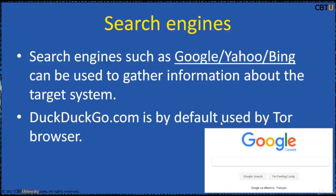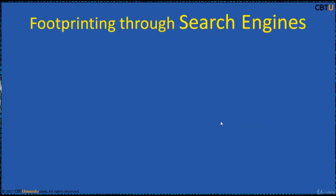A lot and almost everything can be found here with the right querying. Search engines such as Google, Yahoo, and Bing are used to gather information about the target system or enterprise. It depends on how well one knows how to use the search engines to collect information. If used properly, an attacker can gather lots of information about a company, its employees, exposed sensitive information, its capabilities and its policies.